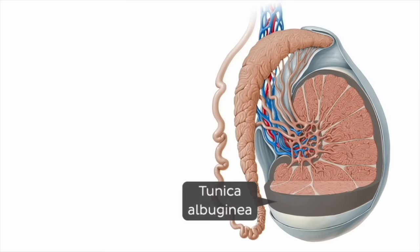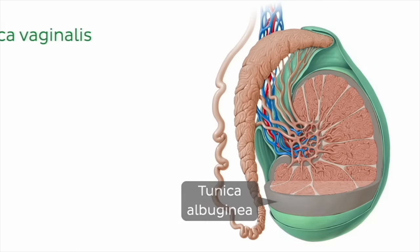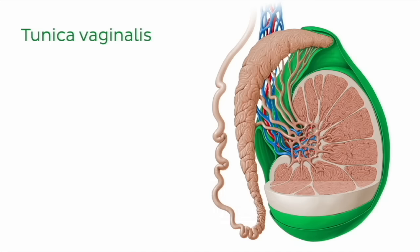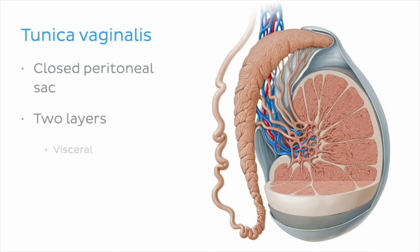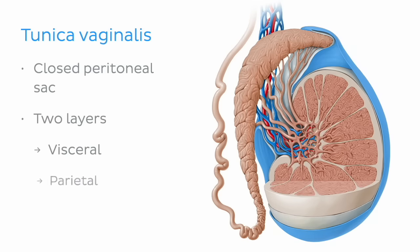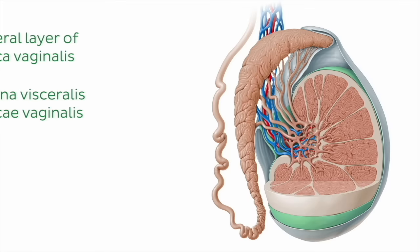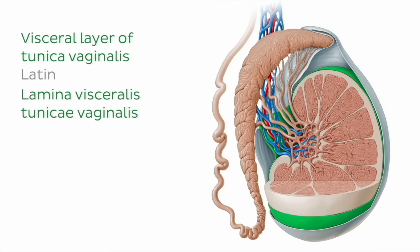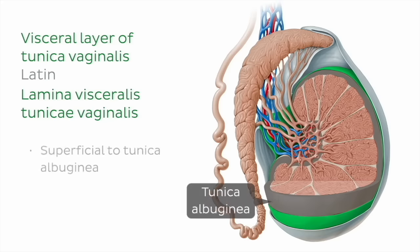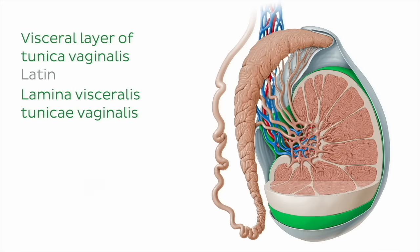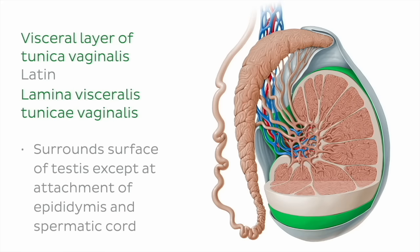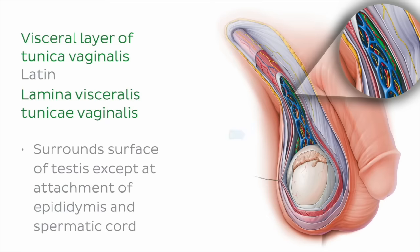Superficial to the tunica albuginea is a layer known as the tunica vaginalis. The tunica vaginalis is a closed peritoneal sac composed of two layers, an inner visceral and an outer parietal layer. The visceral layer of tunica vaginalis lies on the external surface of the testes just superficial to the tunica albuginea.